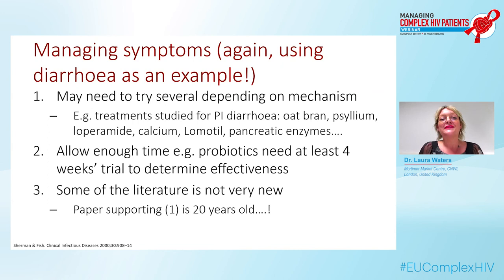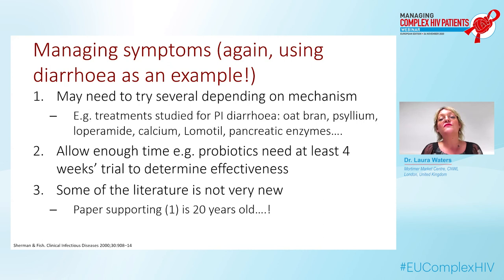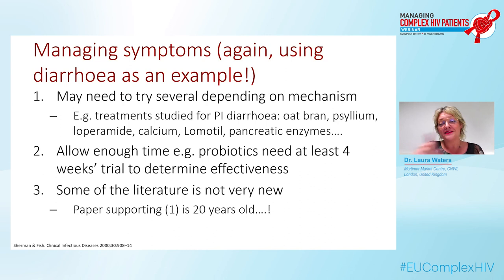When managing symptoms — using diarrhea as an example — you may need to try many different treatments to see an effect, because for protease inhibitor-related diarrhea we don't fully understand the mechanism. You may need to try anti-motility agents and bulking agents to see which is most effective. However, you need to give enough time for treatments to work — for someone with IBS-type symptoms, it's worth trying probiotics but you need at least four weeks before deciding if they're effective. Some of the relevant literature is not very new — one paper I reference was published twenty years ago — but that doesn't mean it's not helpful.